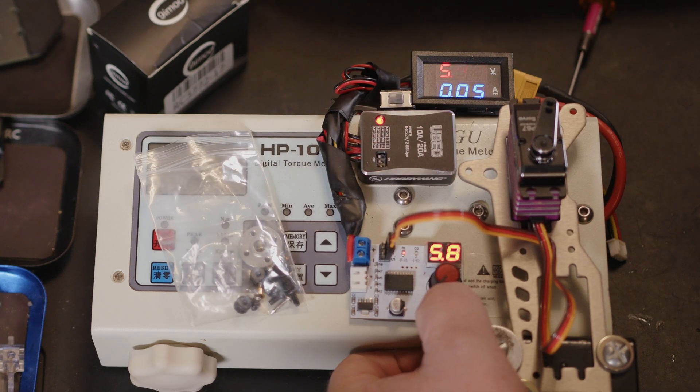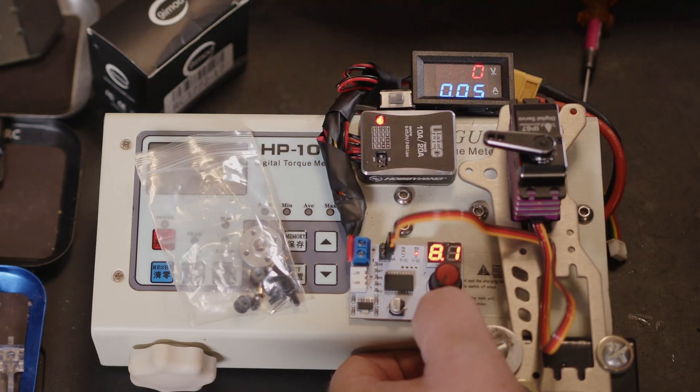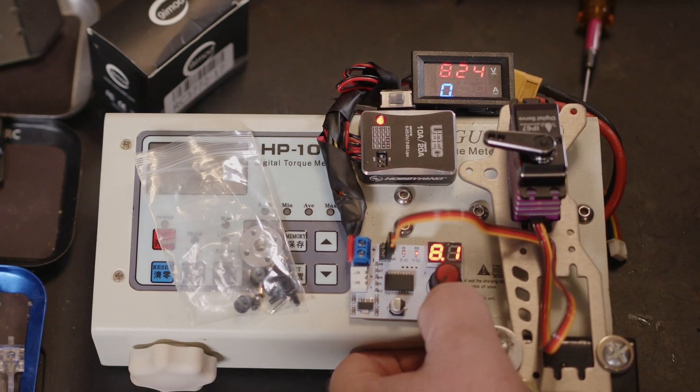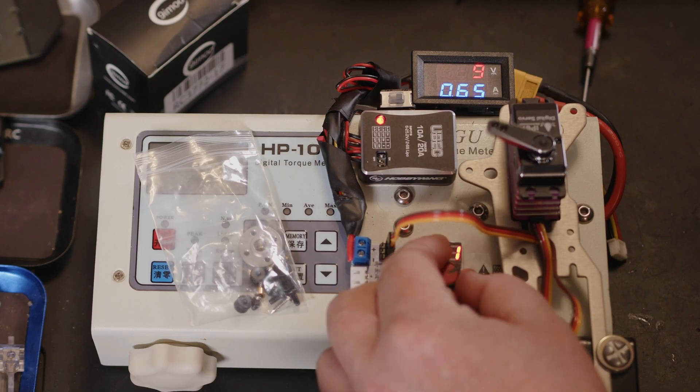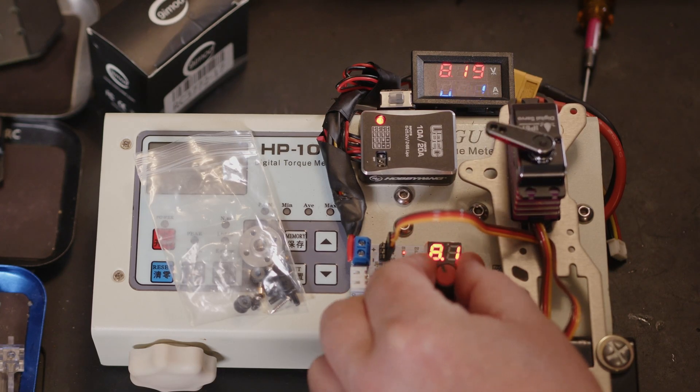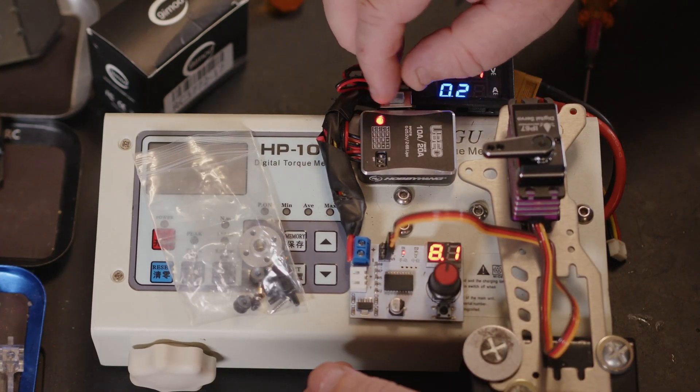And then we can go to 6 volts. So yeah, I think most of you are going to run it at 8.4. That's not a slow servo, certainly for rock crawling, which this is probably aimed at, absolutely perfectly fine.